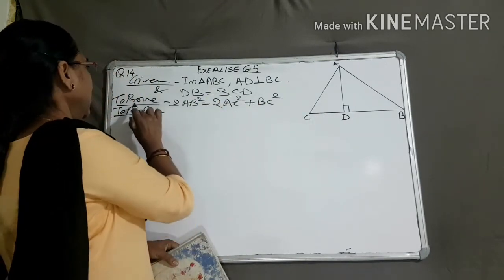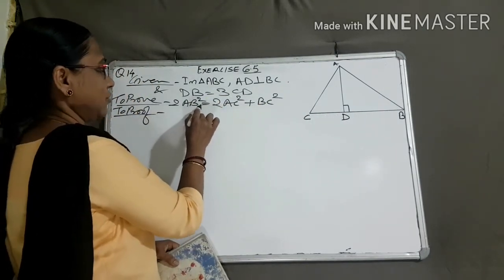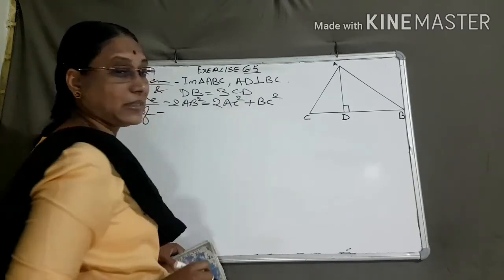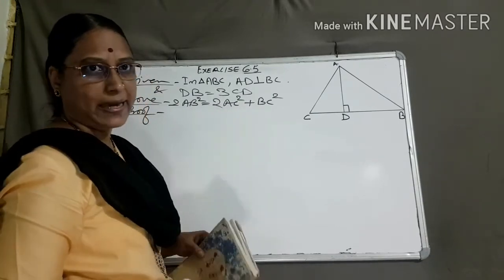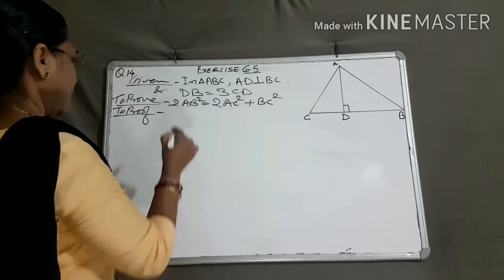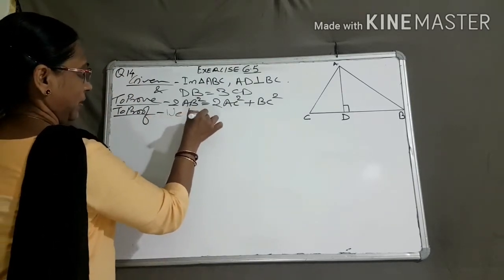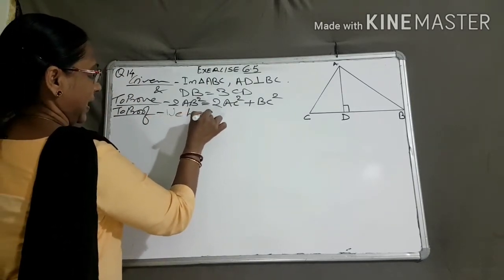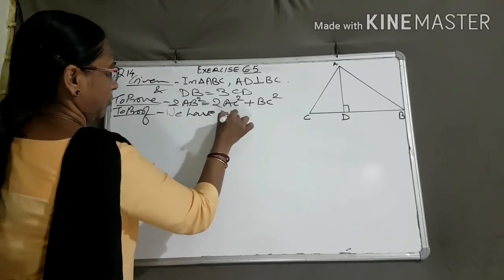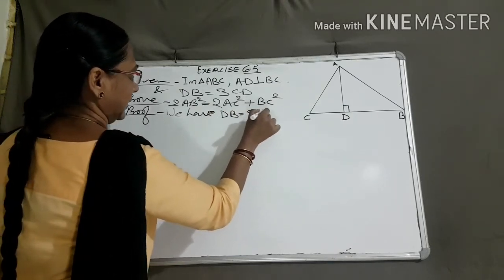We have given. To prove: twice AB square equal to twice AC square plus BC square. Now, we have DB equal to thrice CD.